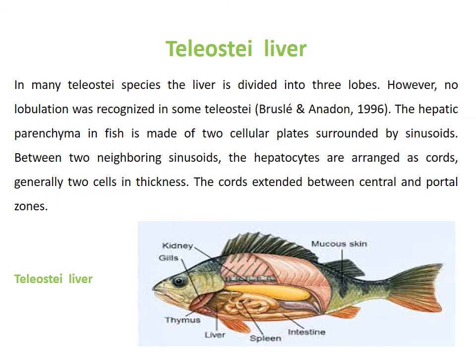The hepatic parenchyma in fish is made up of two cellular plates surrounded by sinusoids. Sinusoids are irregularly shaped vessels formed in the liver that carry blood from the portal and peripheral regions and deliver it to the central veins. Between two neighboring sinusoids, hepatocytes are arranged as cords — generally two cells in thickness.